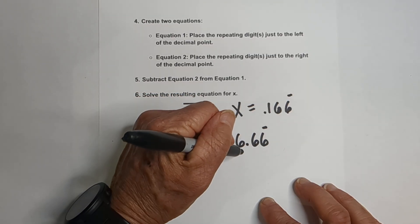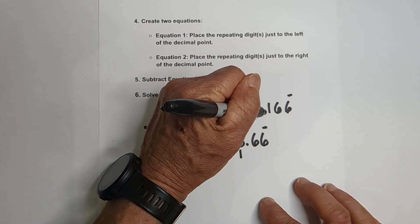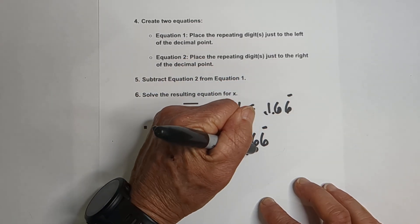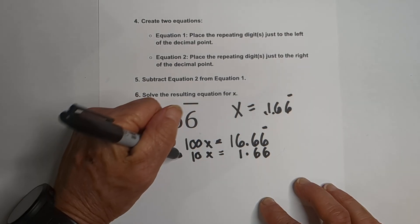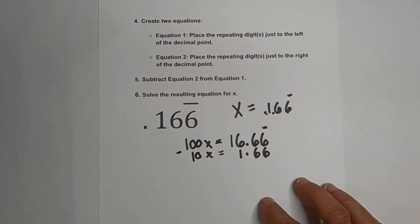So we have 10x equals, and that's going to be 1, because remember we're moving it one place to right there, 1 and 6, 6 again repeating.